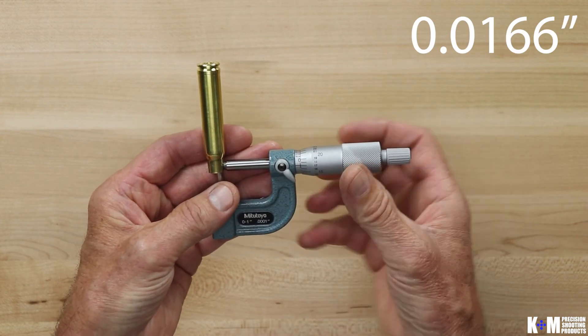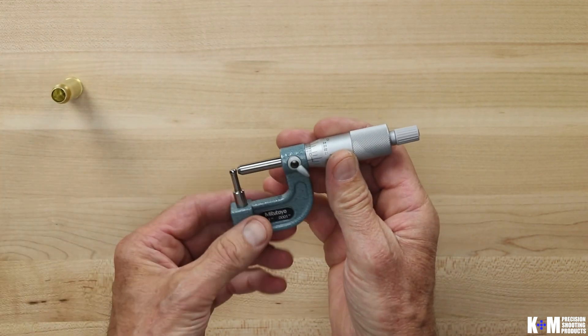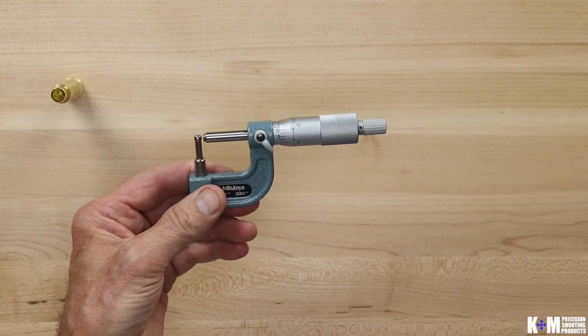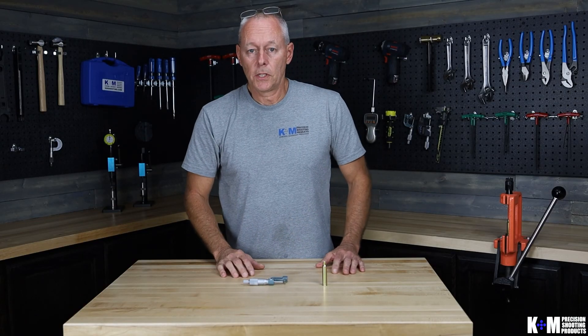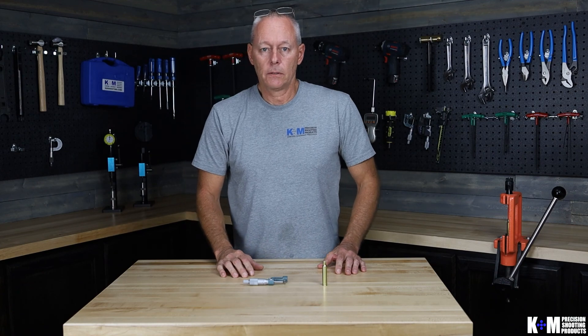So that's how you read a micrometer with the Vernier scale for the fourth decimal place. Thanks for watching and please visit us at camshooting.com